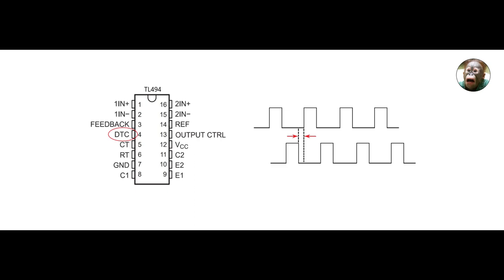The dead time control pin allows us to change the minimum dead time by applying a voltage to it. If we apply zero volts, then our minimum dead time will be 3%. However, if we apply 3.3 volts to this pin, then the dead time will be 100%, meaning the output pulses will be completely switched off. If you want to control the pulse width manually, you can connect a variable resistor to pin 4 as I've shown here.